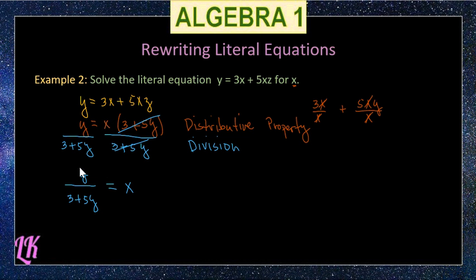In standard form for an equation, we always put the variable we are solving for on the left side of the equation. So this can be rewritten as x = y/(3 + 5z). This is our final answer for the second example.